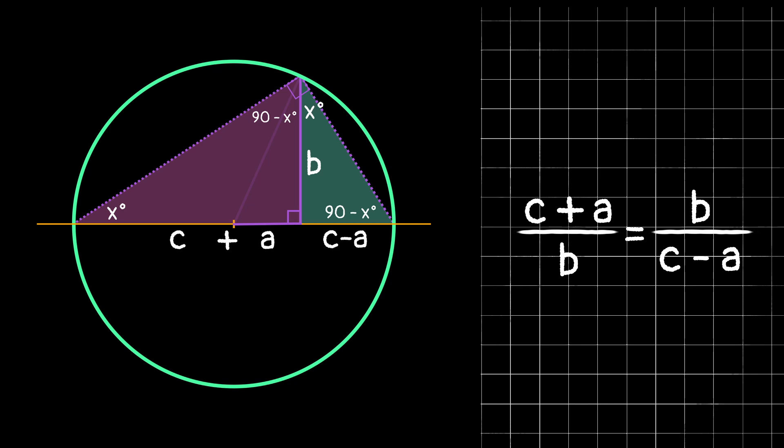We can multiply both sides by b to get rid of that denominator on the left, leaving us with c plus a equals b squared over c minus a, and do the same thing to get rid of the denominator on the other side. We can multiply both sides by c minus a, leaving us with c plus a times c minus a equals b squared.